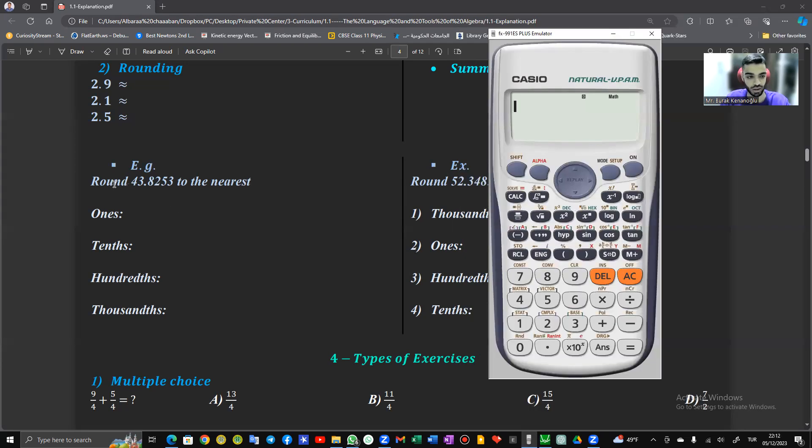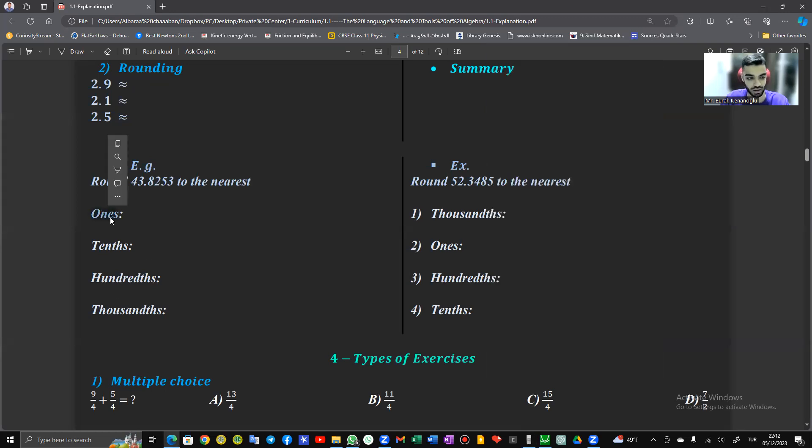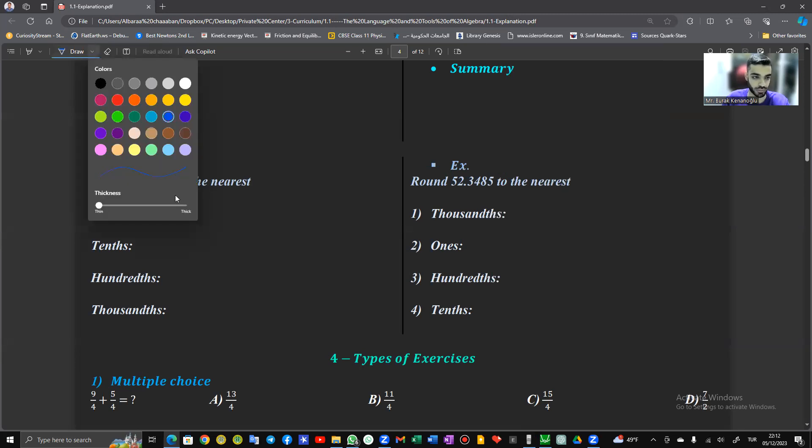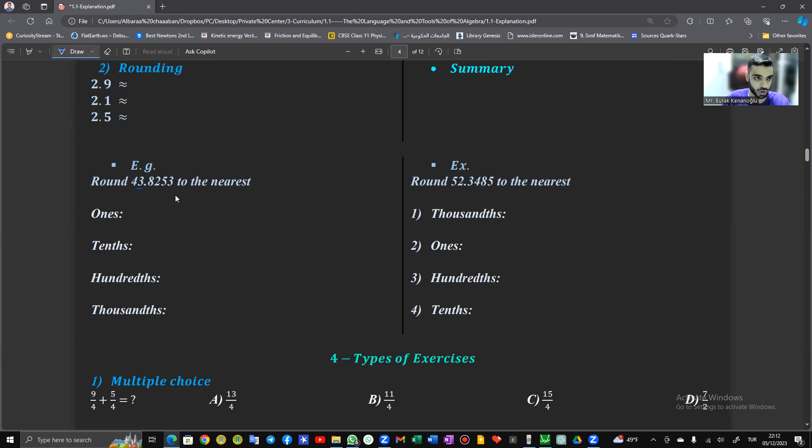So here we need to round this number to the nearest these four digits. So the first digit is the one's digit. Now which number is the one's digit? Here it's the three. So the three is the one's digit. So we have to round up to this number. Now this number comes before the point. So here after the point, we will not have any decimals. So the answer must be a pure number. So we have here zero digits after the decimals.